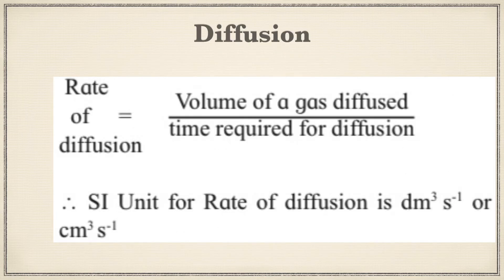The last measurable property of gases is diffusion. We always measure the rate of diffusion: rate of diffusion = volume of gas diffused / time required for diffusion. The SI unit is dm³·s⁻¹ (since dm³ = liter, it can also be expressed as L·s⁻¹ or cm³·s⁻¹).